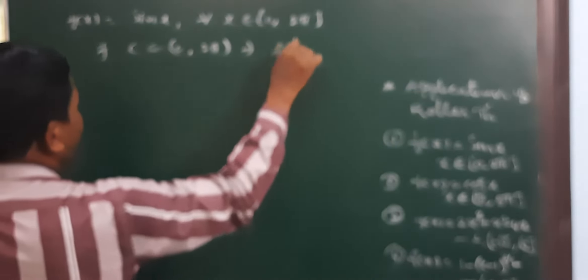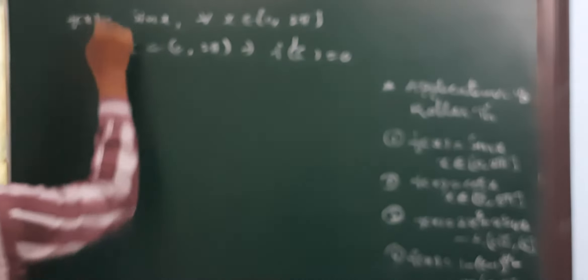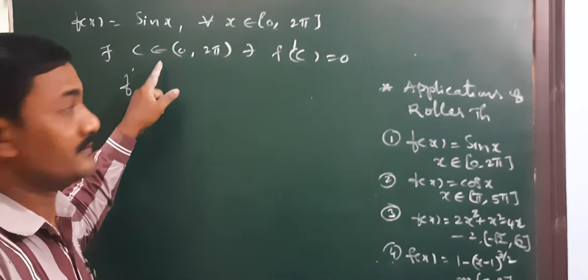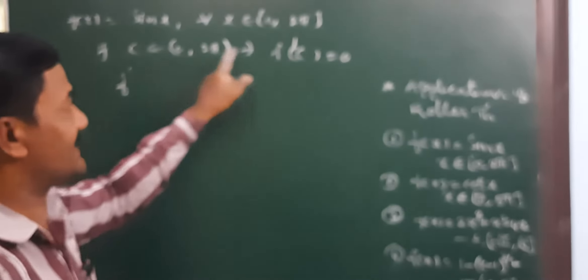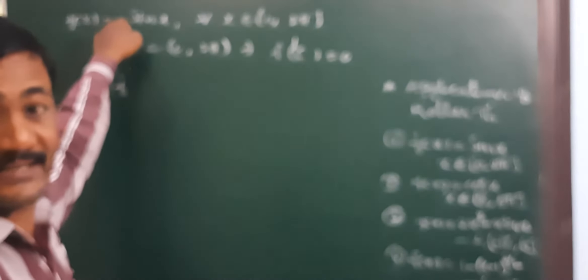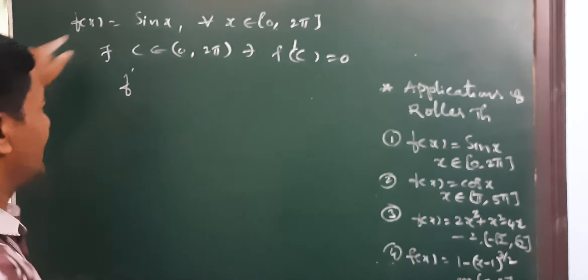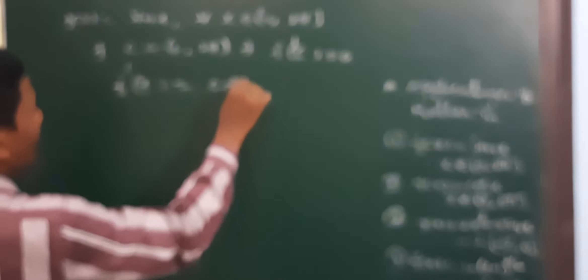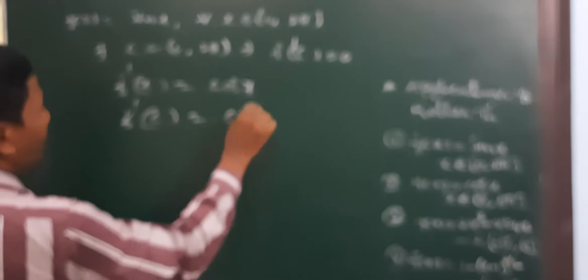Since all three conditions hold, there exists c in open interval (a, b) = (0, 2π) such that f'(c) = 0. Now, f(x) = sin x, so f'(x) = cos x. Therefore f'(c) = cos c = 0.